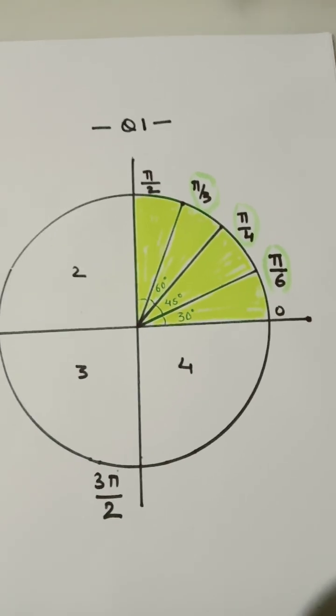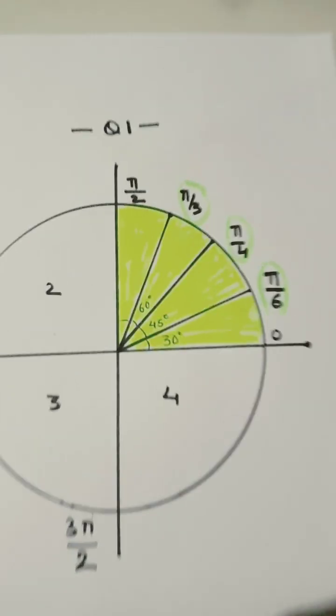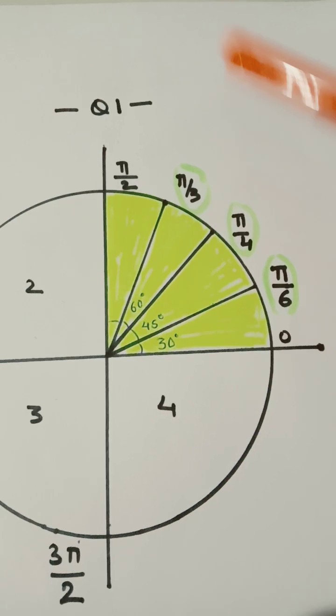In the first quadrant, all we need to do is memorize these three radians: pi over 6, pi over 4, pi over 3.